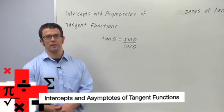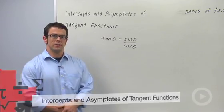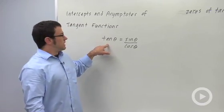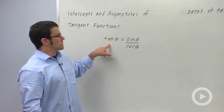Sometimes a homework problem will ask you about the intercepts and asymptotes of a tangent function. Let's investigate that. We start with the identity tangent theta equals sine theta over cosine theta.